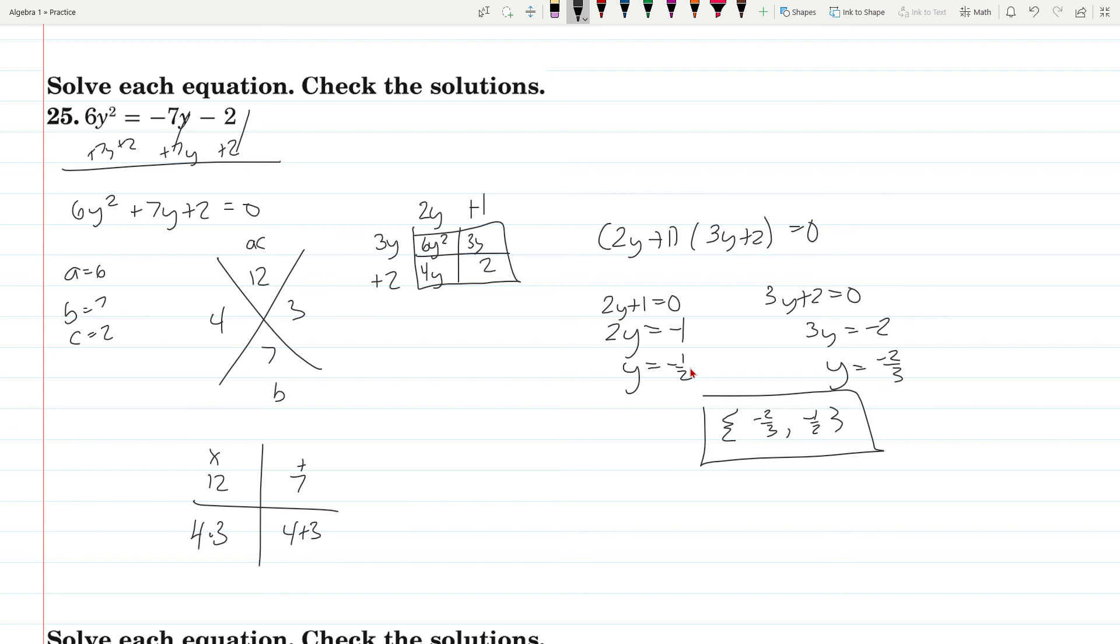Subtract the 1, divide by 2, you get negative 1 half. Over here, subtract the 2, divide by 3, you get negative 2 thirds. So negative 2 thirds and negative 1 half are your solutions to 25.